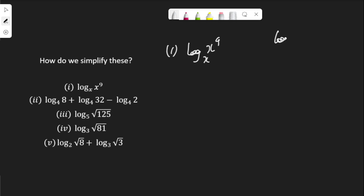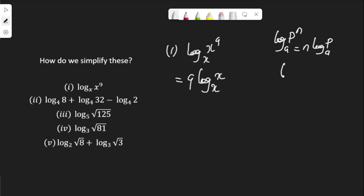I am going to apply the log rule that says log p to the power of n, to base a, is n log p to base a. If I apply this rule to our question, we get 9 log x to base x. We know that log a to base a is 1 — the log of a number to the same base is 1. That means log x to base x is 1, so we have 9 times 1, which is 9.